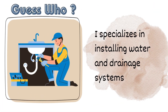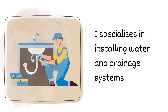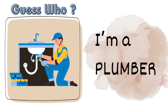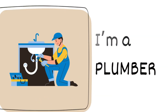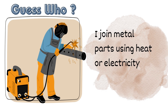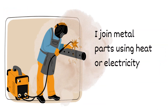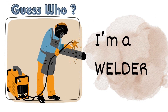Before we start, let us guess who's the person in the picture. First picture: I specialize in installing water and drainage systems. Good job — I'm a plumber! Second: I join metal parts using heat or electricity. Who am I? Correct — I'm a welder!